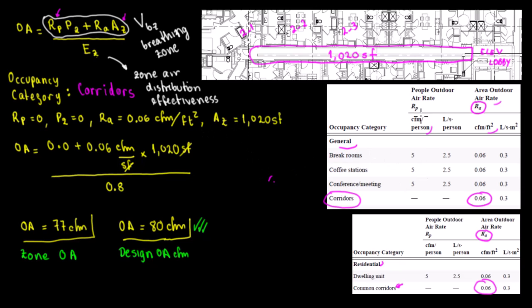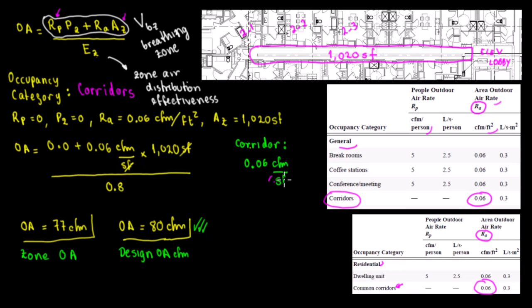Since there is no people outdoor air rate for corridors, whenever someone asks how much outside air you need for a corridor, you can simply say: I need 0.06 CFM per square foot. Even better, you can express it as 6 CFM per 100 square feet.